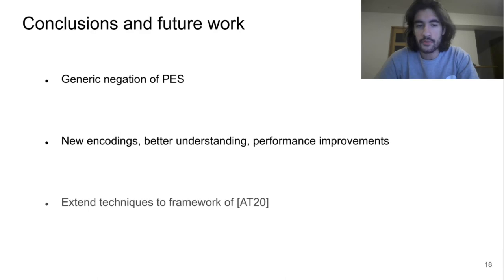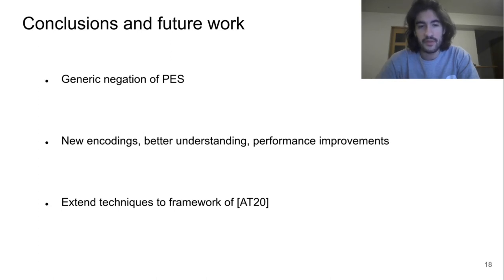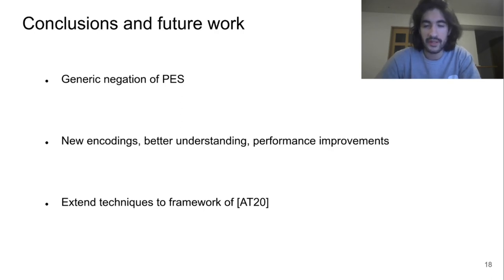I have presented my work on generic negation of pair encoding schemes. I hope this gives a better understanding of this primitive, leads to new encodings, and can potentially lead to performance improvements. As future work, it would be good to extend our techniques to the new framework by Attrapadung and Tomida, where they perform dynamic composition in the standard model of attribute-based encryption. Our techniques are applied to a scenario with a Q-type assumption, which is not a completely standard model, so it will be important to determine whether our techniques apply to that very recent work. Thank you very much for listening.